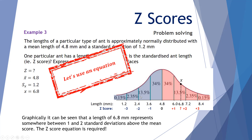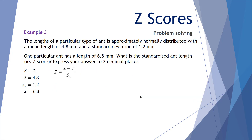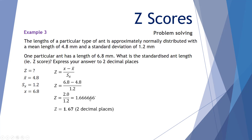Using the z-score equation: the individual score is 6.8, take away the mean of 4.8, divided by the standard deviation of 1.2. This tells us this ant is 2 millimetres greater in length than the mean. Dividing by the standard deviation of 1.2 gives a z-score of 1.6666 recurring. Expressed to two decimal places, that rounds to 1.67.